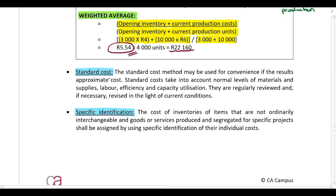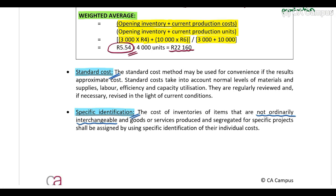Inventory can also be valued at standard cost, though that will be covered in a separate lecture on standard costing. Finally, the specific identification method applies to items that are not ordinarily interchangeable — unique inventory items such as those made by a furniture or vehicle manufacturer. Each unique item must be valued separately, which is obviously very time consuming.